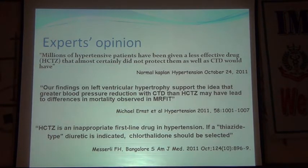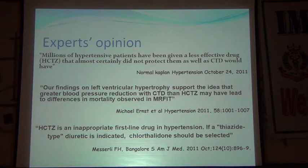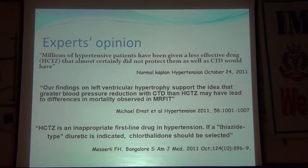Expert opinions: Norman Kaplan stated, 'Millions of hypertensive patients have been given a less effective drug — hydrochlorothiazide — that almost certainly didn't protect them as well as chlorthalidone would have.' Michael Ernst noted that greater BP reduction with chlorthalidone than with hydrochlorothiazide may have led to differences in mortality observed in the Multiple Risk Factor Intervention Trial. Another statement: 'Hydrochlorothiazide is no appropriate first-line therapy in hypertension. If a thiazide-type diuretic is indicated, it should be chlorthalidone.'